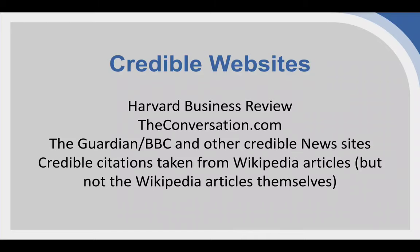Lastly, if you use Wikipedia to get a quick understanding of something, please don't reference Wikipedia itself. At the bottom of well-sourced Wikipedia articles, you'll find a long list of citations. Some of those will be credible, some will not — but you can use that list, read the source, evaluate whether it's credible, and then reference that source instead of the Wikipedia article itself.